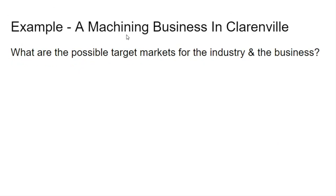What are the possible target markets? If you're thinking about machining, the oil industry might be your target market if it's growing and has demand — or maybe pulp and paper, or new opportunities like hydrogen or windmills. You need to think about who you're selling to, who would be the bulk of your customers. And recalling the Pareto principle, 80% of your sales come from 20% of your customers — you want to target that top 20%.